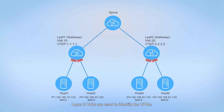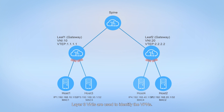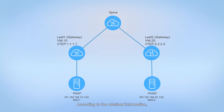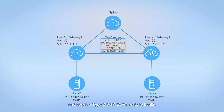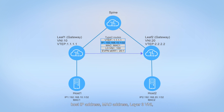Layer 3 VNIs are used to identify the VPNs. According to the obtained information, leaf 1 saves the host route of host 1 in the local VPN and sends a Type 2 BGP eVPN route to leaf 2. Information carried in a Type 2 BGP eVPN route includes the local VTEP address, host IP address, MAC address, layer 3 VNI, and outbound RT value of the eVPN instance.